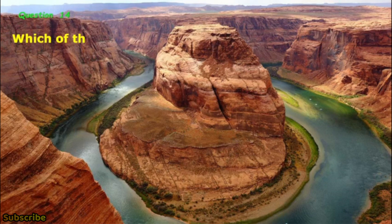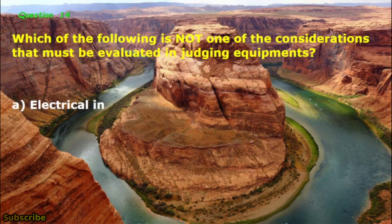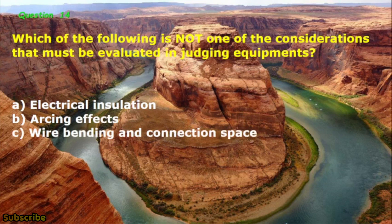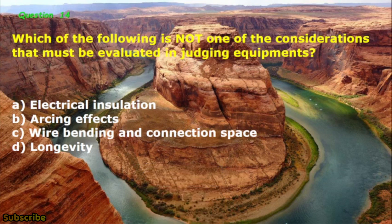Question No. 14: Which of the following is not one of the considerations that must be evaluated in judging equipment? A. Electrical insulation, B. Arcing effects, C. Wire bending and connection space, D. Longevity. The correct answer is letter B: Arcing effects.